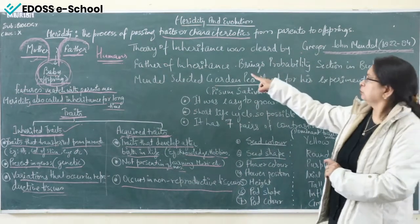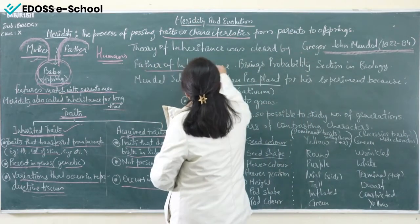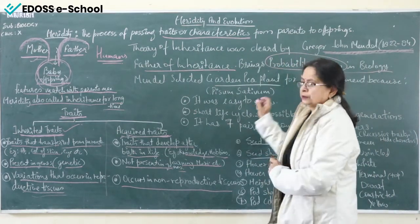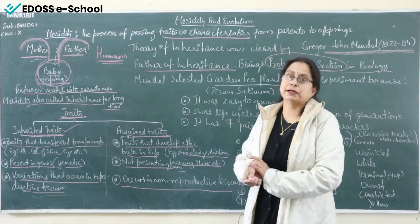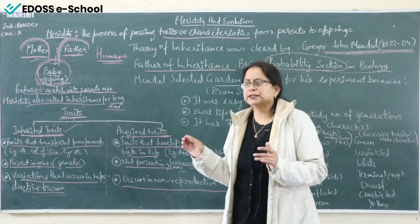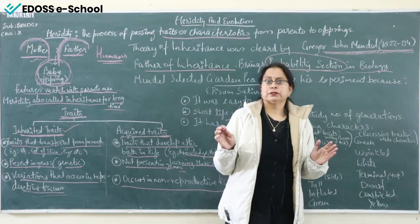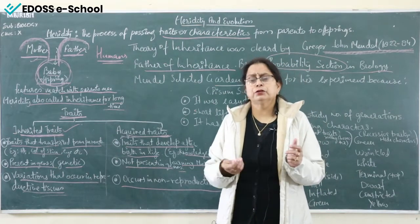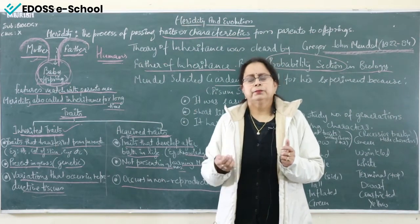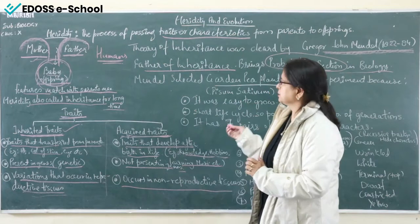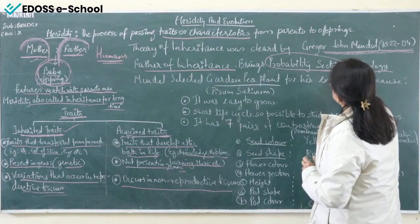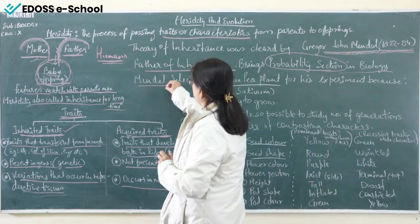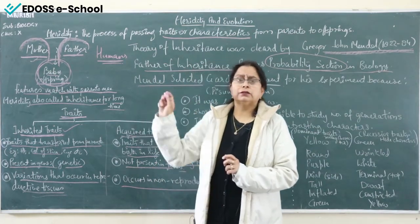The theory of inheritance was clarified by Gregor John Mendel, an Austrian monk known as the father of inheritance. He also brought the probability section of mathematics into biology. Bio is a subject with theory and diagrams but no mathematical portion — Mendel introduced a slight section of probability. All his experiments were done on the garden pea plant.